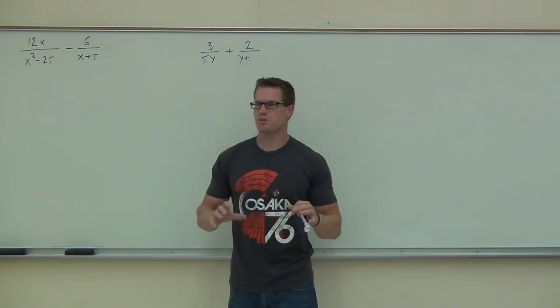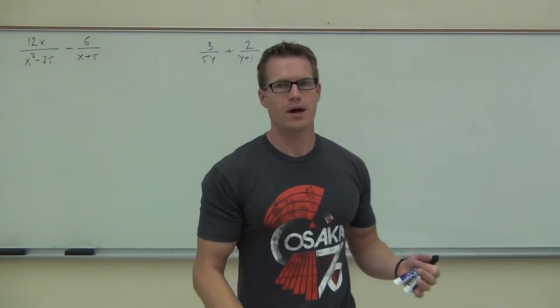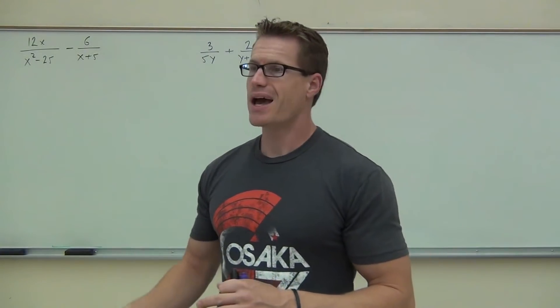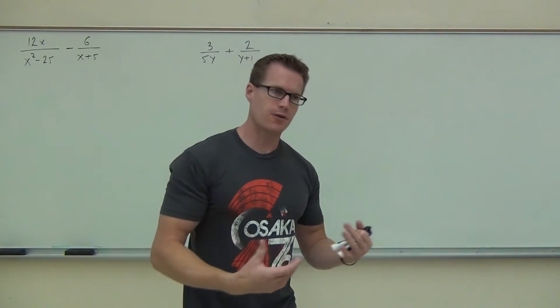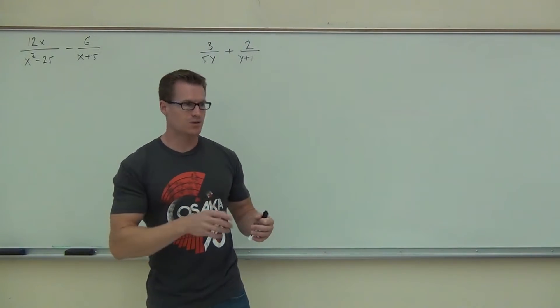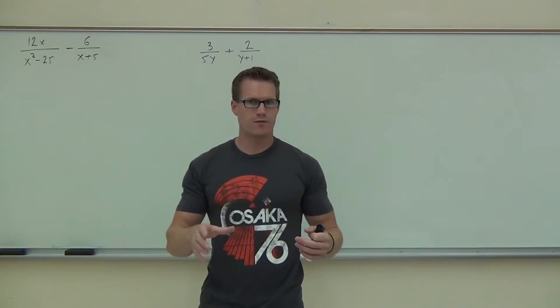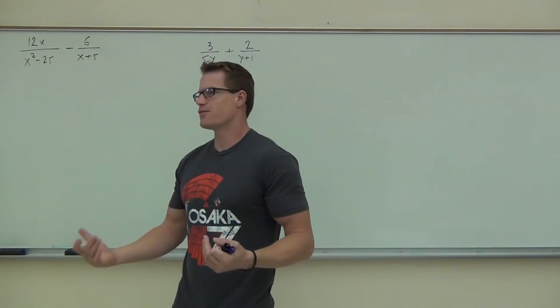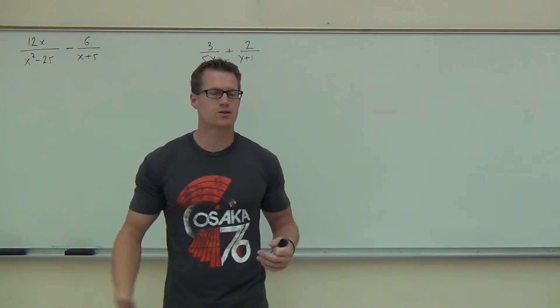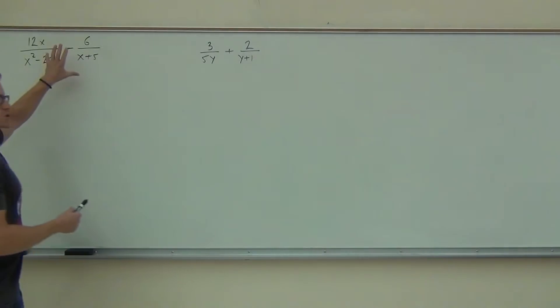So we know when we're dealing with rational expressions, the first thing we always do is at least factor the denominators, and especially in this case, because if we're looking for the LCD, what we know is that the LCD is the largest power of each different factor. We can't find factors unless this thing is factored. So when we factor our first example here, the X plus 5, we leave that alone. There's nothing we can do there. However, the X squared minus 25, that should just be instant for us.